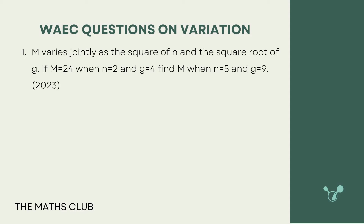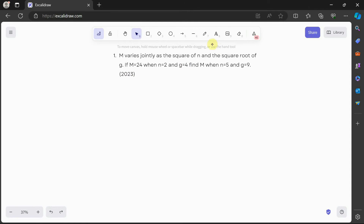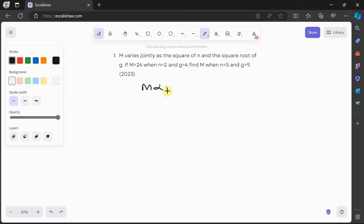The first question, taken from WASSCE 2023, states that m varies jointly as the square of n and the square root of g. If m is equal to 24 when n is equal to 2 and g is equal to 4, find m when n is equal to 5 and g is equal to 9. I want you to pause the video and try this out yourself. Welcome back, let's solve it together.